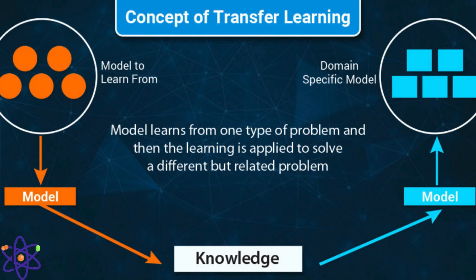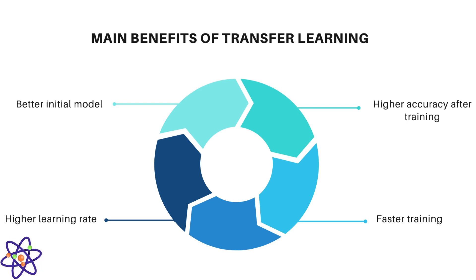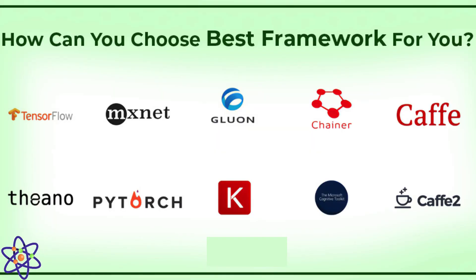Benefits of transfer learning include data efficiency, computational efficiency, and improved generalization. Transfer learning is widely used in various domains including computer vision, NLP, and speech recognition. In computer vision, pre-trained models like ResNet, VGG, and MobileNet are often used as starting points for tasks such as image classification, object detection, and segmentation. Transfer learning is especially beneficial in scenarios where obtaining large labeled datasets for every specific task is challenging.